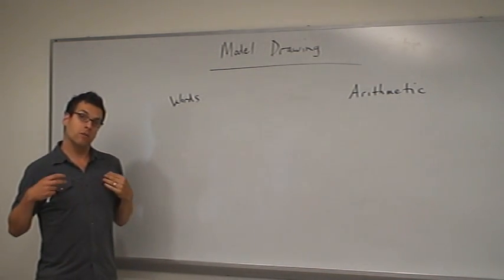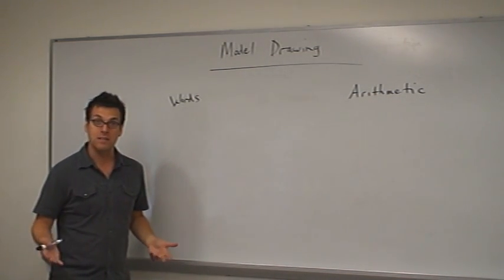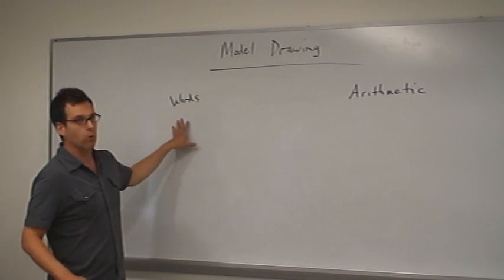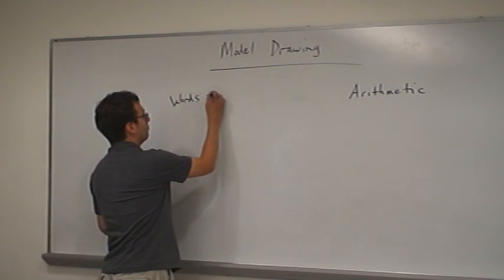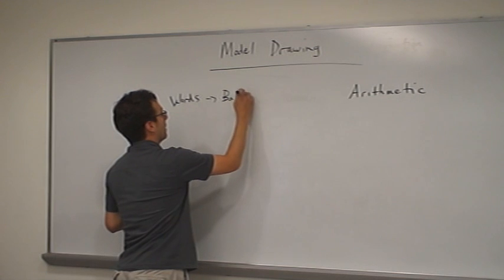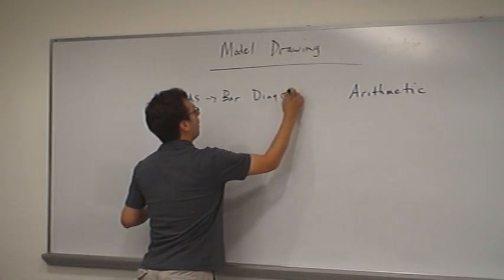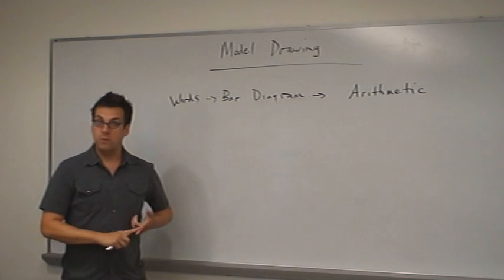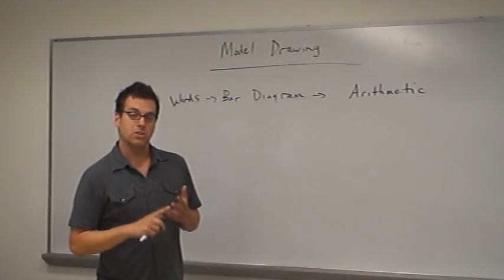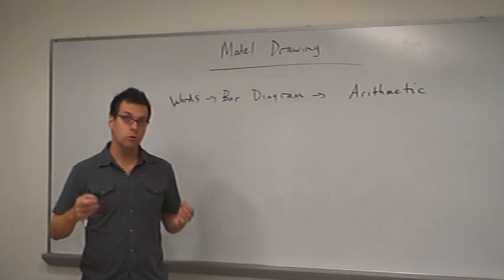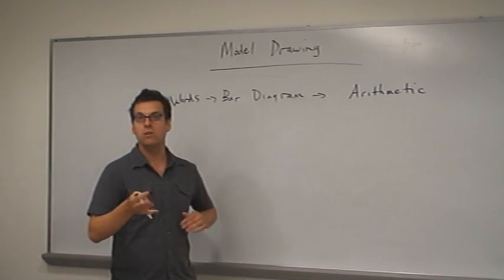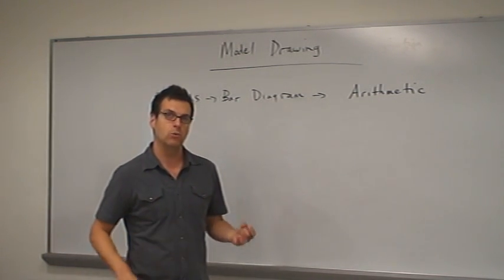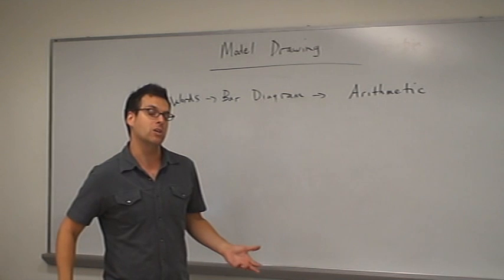What the model drawing process does is it gives us a bridge between the words and the arithmetic in the form of a bar diagram. You recall when we discussed models and interpretations of addition, subtraction, multiplication, and division, in each case we drew bar diagrams that could be used to illustrate and connect to a particular arithmetic operation.